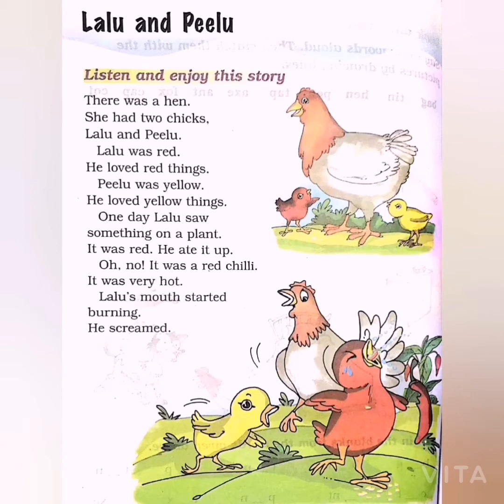There was a hen — ek murgi thi. She had two chicks — uske do chicks thay. Chicks matlab murgi ke bachche. Lalu and Pilu — ek ka naam tha Lalu aur ek ka naam tha Pilu.